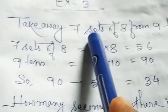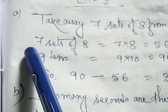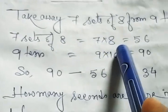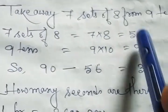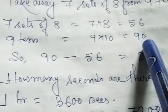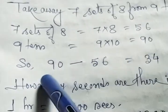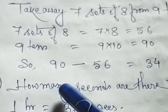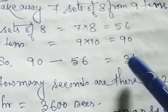Take away 7 sets of 8 from 9 tens. At first, what is the meaning of 7 sets of 8? 7 sets of 8 means 7 multiply by 8 equal to 56. Next, 9 tens. 9 tens equal to 90. So, 90 minus 56 because take away means subtract. 90 minus 56 equal to 34.